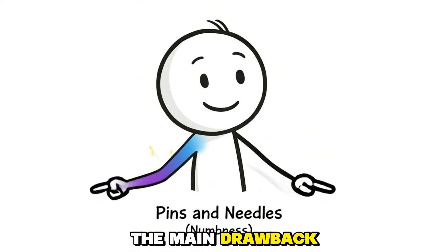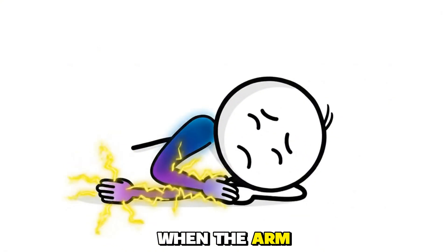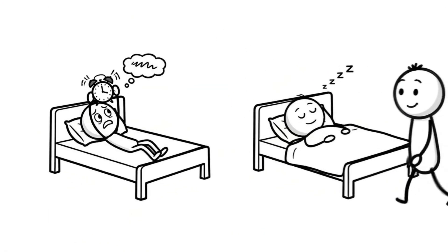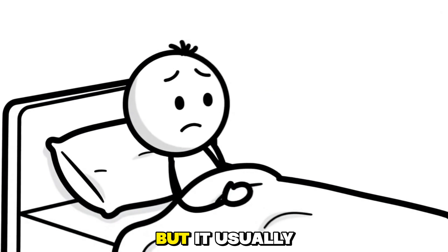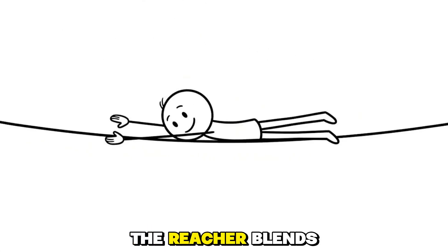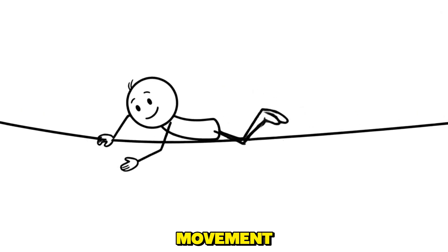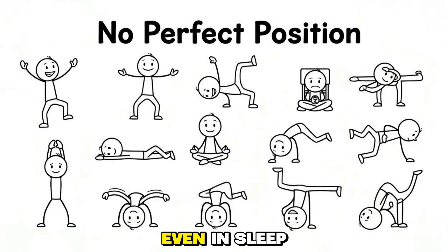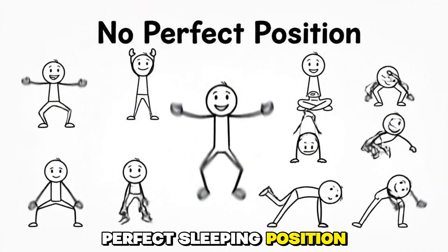The main drawback appears in circulation issues when the arm stays under the head too long. Numbness can happen, but it usually fades quickly once the pressure is removed. The Reacher blends openness with gentle movement, like reaching for balance even in sleep.